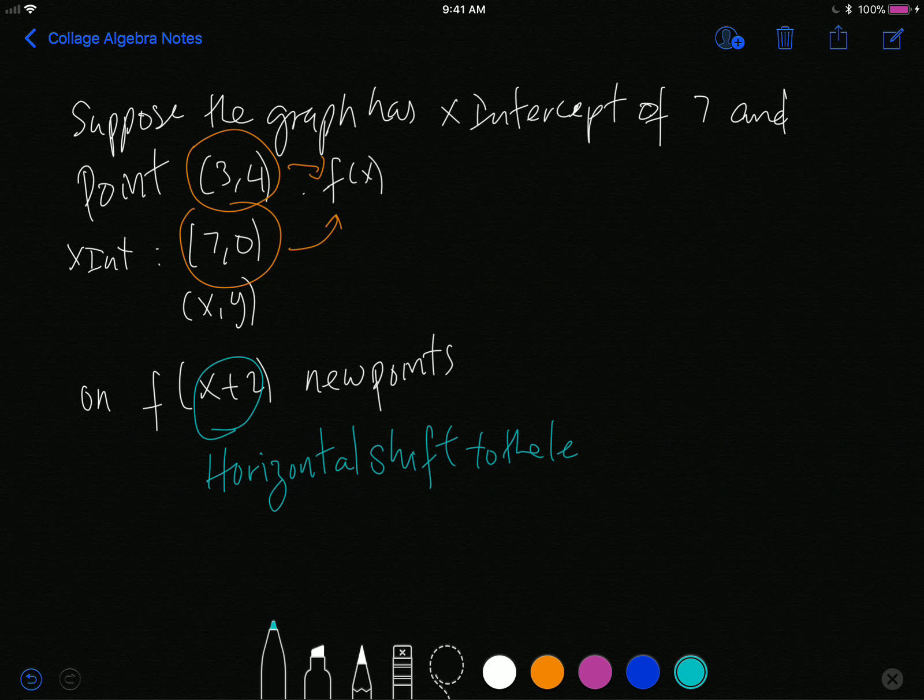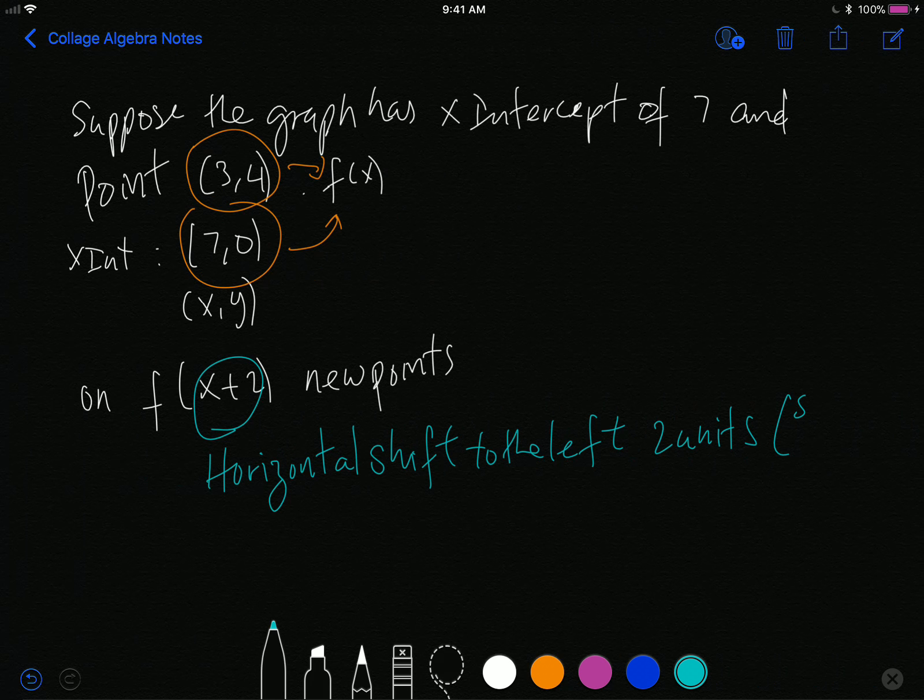And x+2 right here is a horizontal shift to the left, that's right, Beyonce style, 2 units. Another way of saying that is to subtract 2 from the x values.